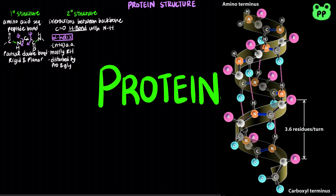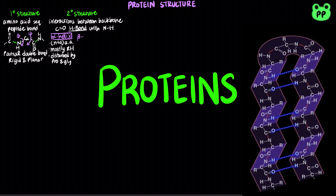On the other hand, glycine has more conformational flexibility than other amino acid residues. Therefore, it disturbs the alpha helix by random coiling.